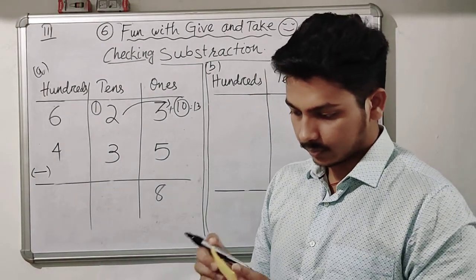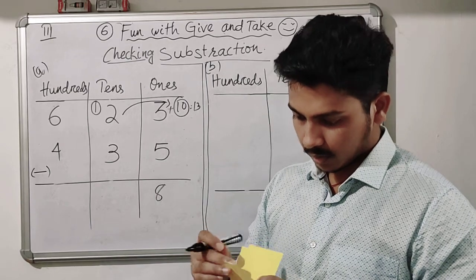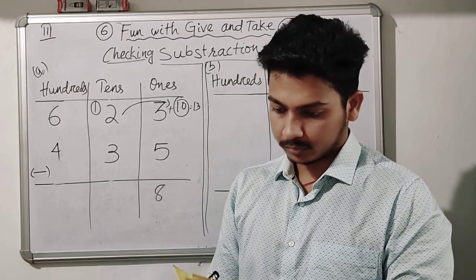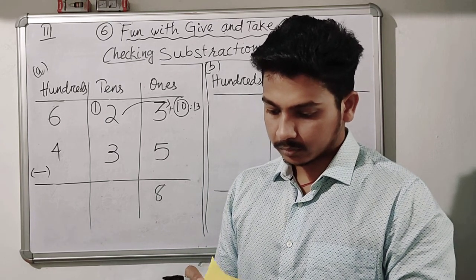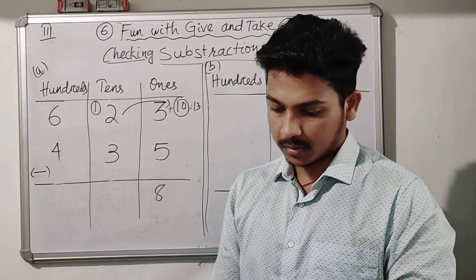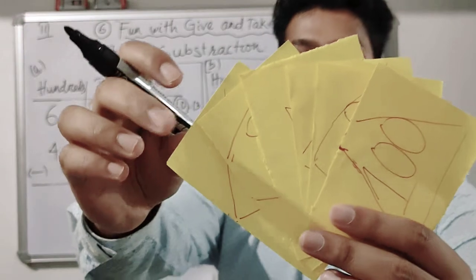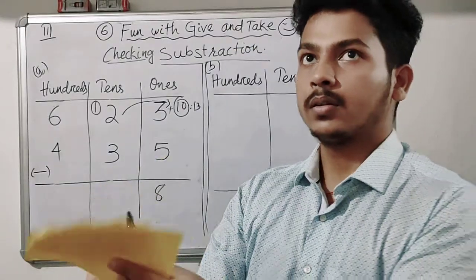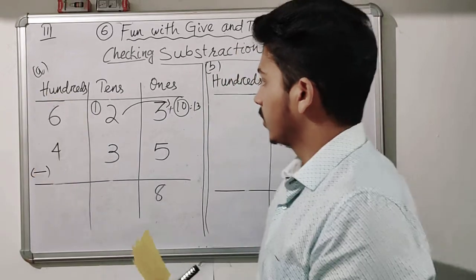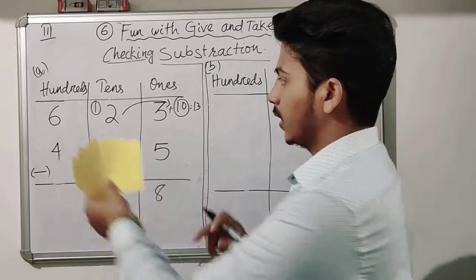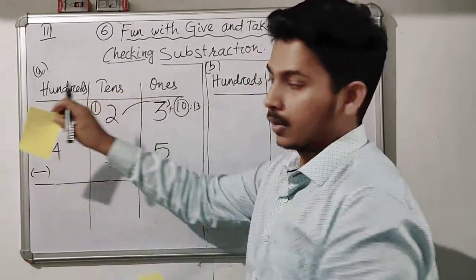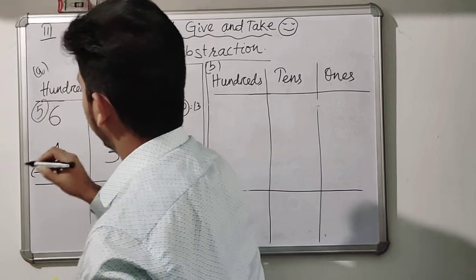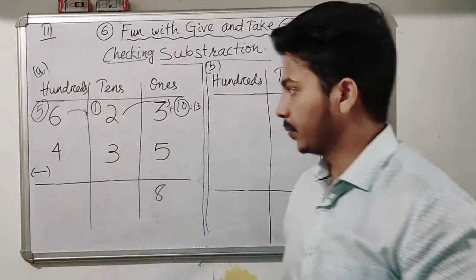Six hundreds are there. Let me show you: one, two, three, four, five, and six hundreds. So it will give one hundred here.